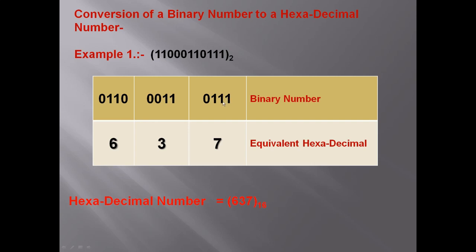0110 binary is equivalent to 6, 0011 is equivalent to 3, and 0111 is equivalent to 7. So we write the values 6, 3, 7 and the base will be 16. This binary number has been converted to the hexadecimal number 637 base 16. Hope you all understood.